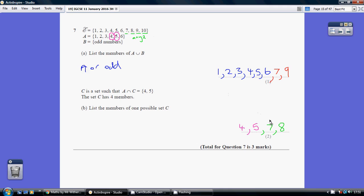I've chosen 7 and 8. So what we're saying is these are the members of C. These are the members of A. The only numbers that are in A and in C are 4 and 5.